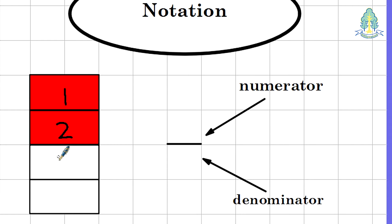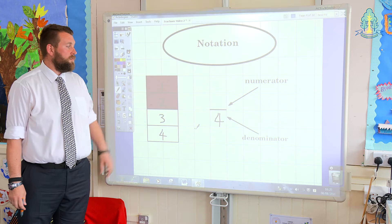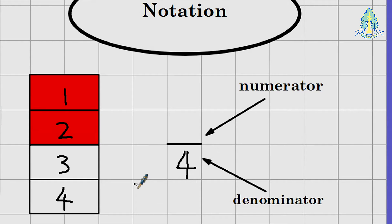1, 2, 3, 4. So the denominator is 4. The numerator refers to the amount of parts taken from the whole. In this case, the numerator is 2. So we have 2 quarters.